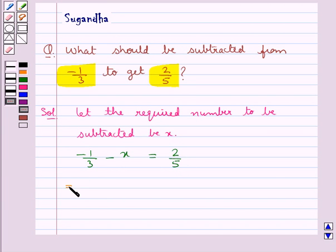This means we have x = -1/3 - 2/5. That is, x equals... now to subtract these two rational numbers we need to take the LCM of the denominators 3 and 5 which is 15.